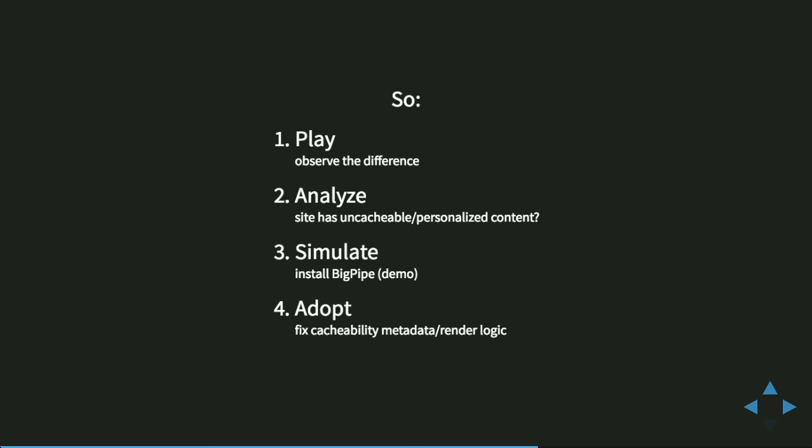The message is: play, analyze, simulate, and adopt. Play with it to see what the difference can be. Analyze your particular site — does it have uncacheable content, personalized content? If so, simulate it and install the BigPipe module locally or on a testing environment. When you try to adopt it, you may need to fix a bit of cacheability metadata if you have custom code that didn't specify the correct metadata. For example, if something is varying by user or by session but you didn't specify the corresponding cache context, BigPipe and Drupal don't know, and it may end up caching incorrectly — in that case you need to fix that.